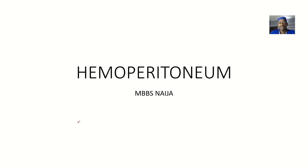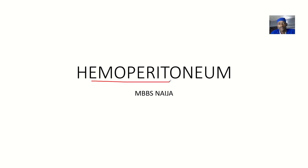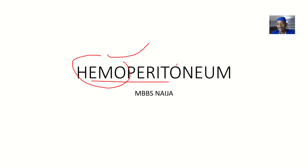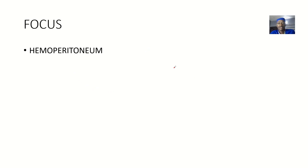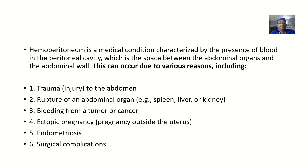Another possible cause of abdominal pain is what is known as hemoperitoneum. When you see big words like this, try to define them from first principles. What is 'hemo'? Hematuria — anything with 'hemo' relates to blood. What is 'peritoneum'? The peritoneal cavity. So basically, hemoperitoneum means there is blood in the peritoneum.